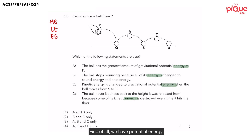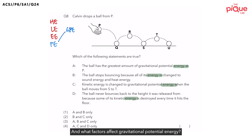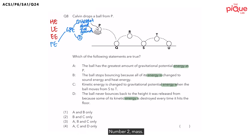First of all, we have potential energy, and there are three types of potential energy. The first is gravitational potential energy. What factors affect gravitational potential energy? Number one, we have height above the ground. Number two, mass.